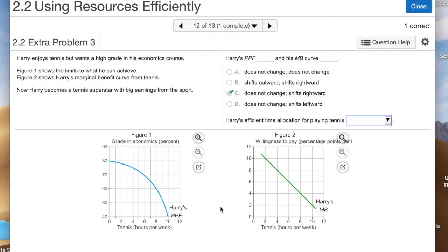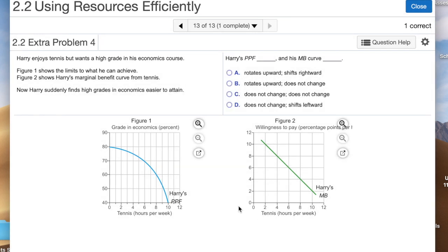The next question is similar. We again have the original PPF and the marginal benefit curve, but this one says now Harry suddenly finds high grades in economics easier to attain. So without putting in perhaps as much effort or time, he's able to achieve higher grades. How does this impact these two graphs? Remember, the PPF is showing the limits to what he can achieve. Well, he can now achieve more, so this is going to rotate upward where we can get higher grades. It's going to kind of pivot from this point down here at the bottom of the PPF. It's going to rotate up.